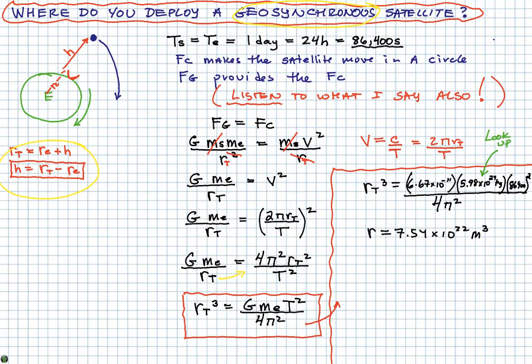Okay, so actually that's, sorry, r cubed or r to the third power is equal to that. So if I take the cube root of that, that's going to be equal to 4.23 times 10 to the 7 meters. Okay, so that's going to be r_t.